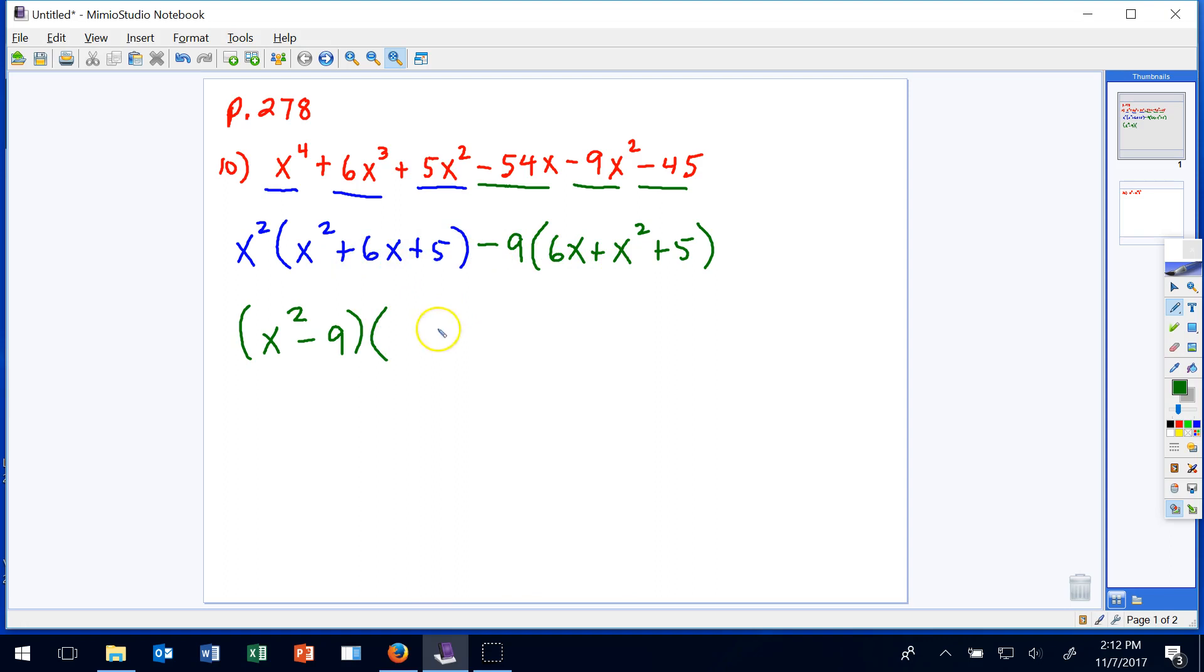Then the matching parentheses will be the other factor, and we can't stop if there is a possibility of factoring further. We actually, each of these can be factored. This left binomial represents the difference between two squares, two perfect square terms, so remember back from your algebra one days that factors as x plus 3 times x minus 3.